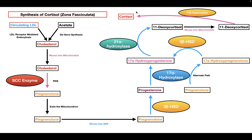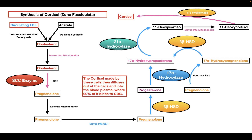Once the cortisol is formed by the cells in the zona fasciculata, it can diffuse out of the cells and into the plasma. In the blood plasma, 90% of the cortisol is going to be bound to cortisol binding globulin.